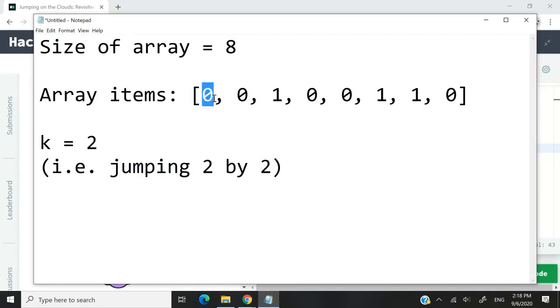When we say here that k equals two, it means that she's jumping the clouds two by two. So she begins here, cloud zero. Then she will jump here to cloud two, which is the third item of the array. Then she will jump here, cloud four. Then here, cloud six. And then she will restart. So one, two. And she will land here at the beginning again. So because she's back here on cloud zero, the game ends.